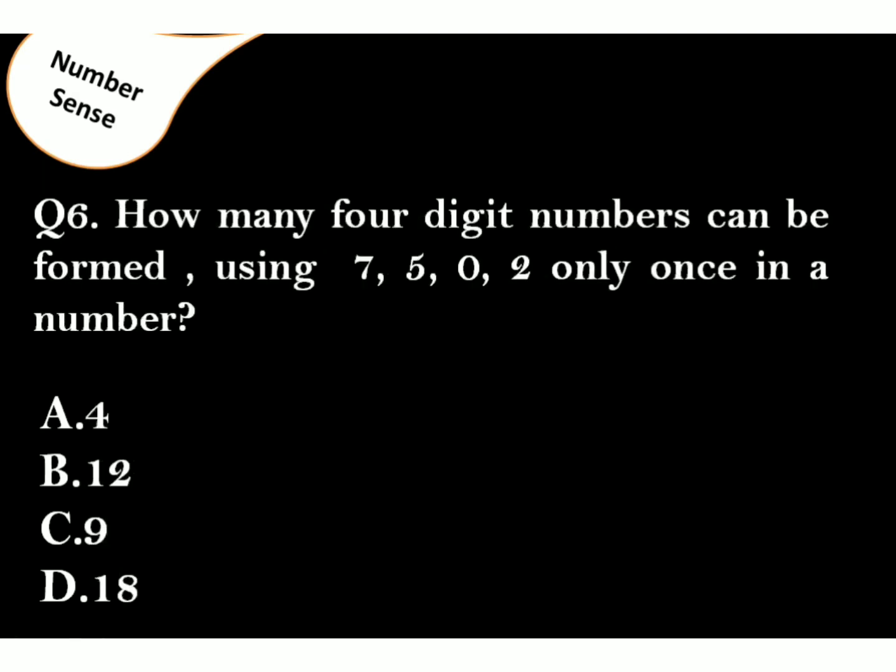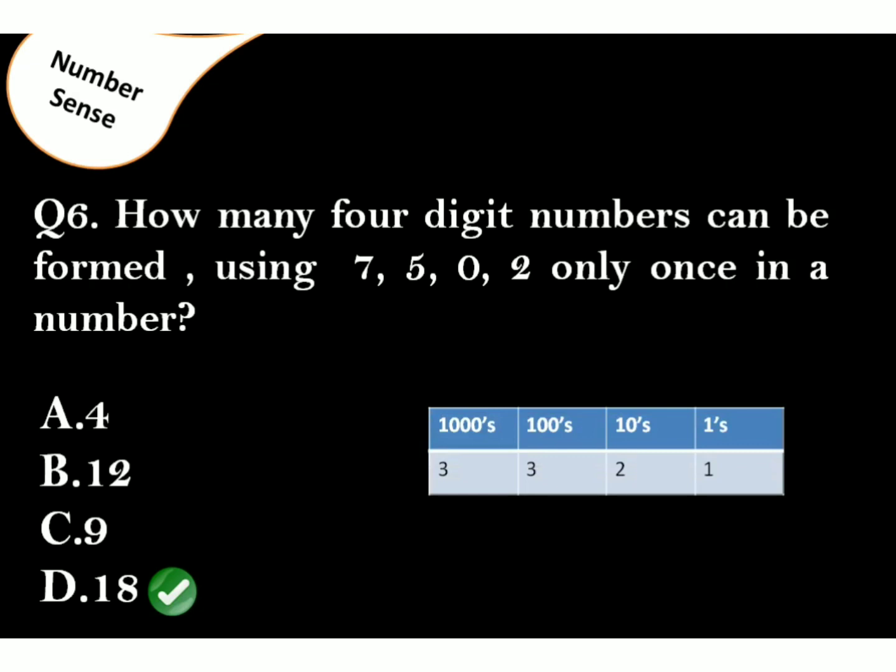How many 4-digit numbers can be formed using 7502 only once in a number? Answer is Option D. Such questions take more time. So, I will tell you one trick for this. At 1000's place, only 3 numbers can come. You cannot place 0 on 1000's place because it's a 4-digit number. At 100's place, you can put 3 numbers because you have already used 1 number on 1000's place. Similarly, at 10's place, you can put 2 numbers. And finally, on 1's place, you can put only 1 number. So, to know the answer, multiply these numbers. And answer comes 18.